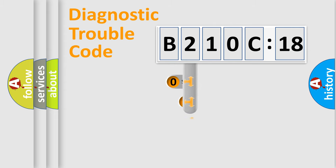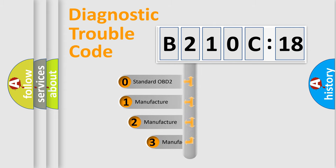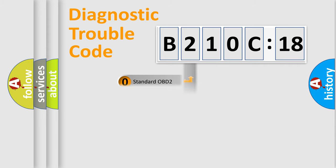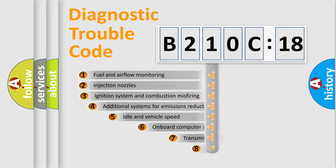This distribution is defined in the first character code. If the second character is expressed as zero, it is a standardized error. In the case of numbers 1, 2, or 3, it is a more specific expression of the car-specific error.